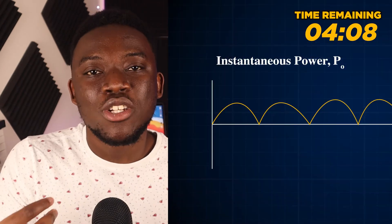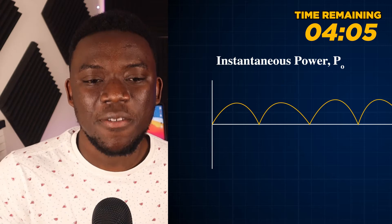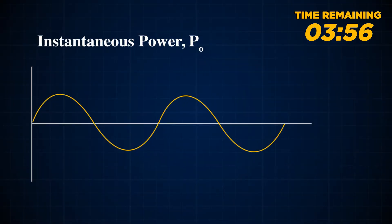For a circuit with a resistive load, the phase difference between the current and voltage are the same and would result in an instantaneous power which is always positive. For a circuit with reactive loads — that is, a capacitor or an inductor — the phase difference between the current and the voltage would not be the same and would result in an instantaneous power that varies in polarity at each point in time.